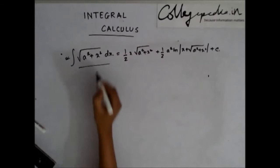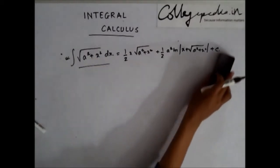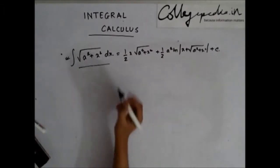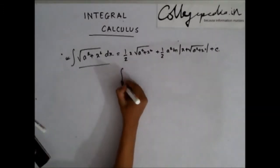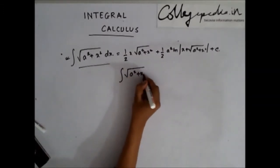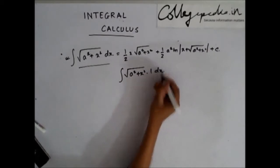Here, you see that you have only one function, so I'll take the other function as a constant. This becomes the integration of √(a²+x²) · 1 dx.